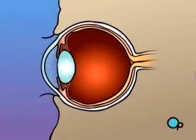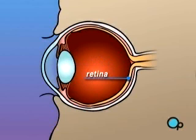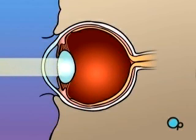The human eye is constructed like a camera, with a clear lens in the front and light sensitive tissue at the rear. This tissue makes up the retina, which acts like a photographic film. In an eye that has perfect vision, light rays passing through the pupil are focused by the lens to fall precisely at the center of the retina.